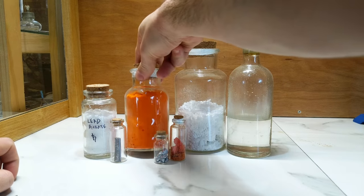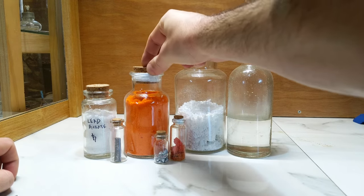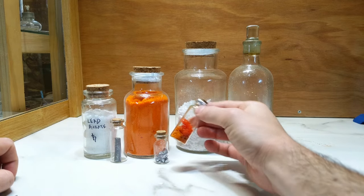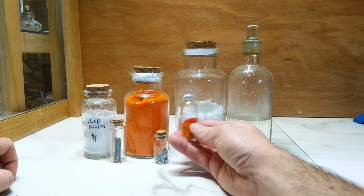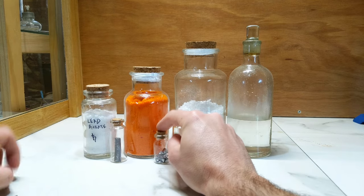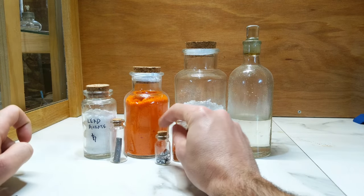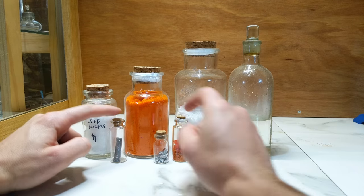So here we have the large jar, this is potassium dichromate. Here we have a small sample of crystals of ammonium dichromate, and here in the jars we have our samples of chromium, elemental chromium and lead.